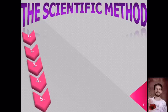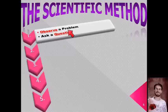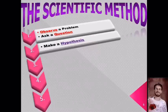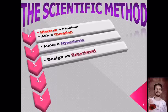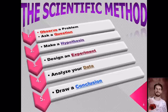Step number 1 is observe a problem or ask a question. This is where it all starts — you're either going to look at something that needs fixed and try to figure out how to fix it, or ask a question, because all of science is about trying to figure something out. Then you make your hypothesis, design your experiment, analyze your data, and finally make your conclusion. You'll want to put a little star next to this because you're going to need to know each of these steps in order.